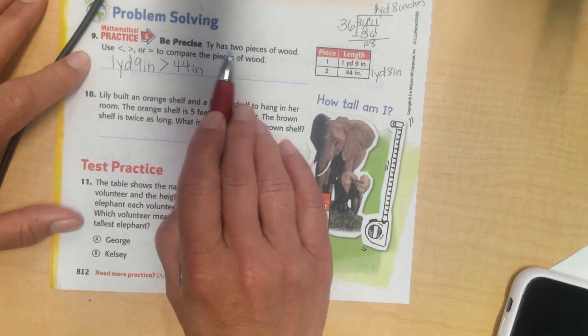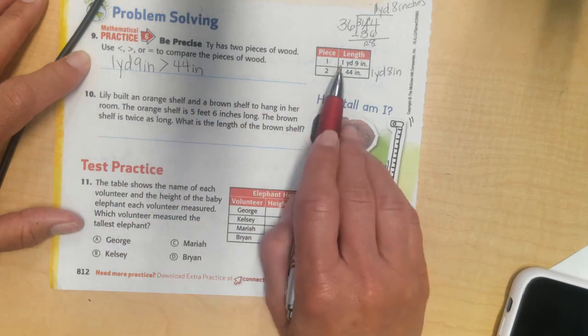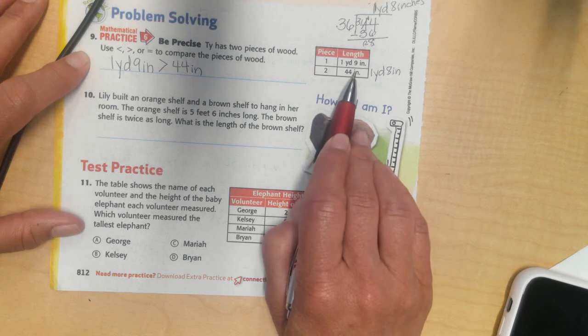So, there was Ty, he had two pieces of wood, and I had to use less than, greater than, or equal to, to compare the pieces of wood. I had one yard and nine inches, and I had 44 inches. So, I'm going to turn my 44 inches into yards.